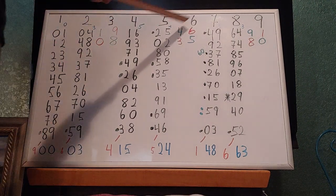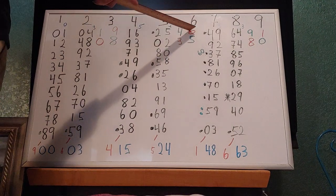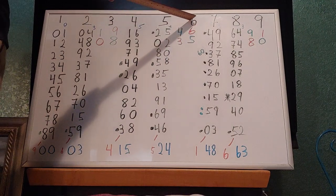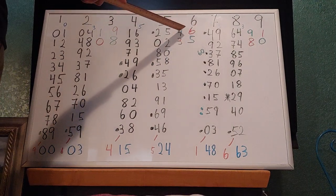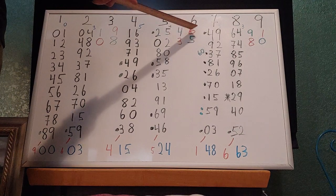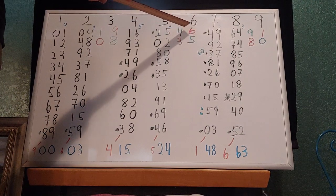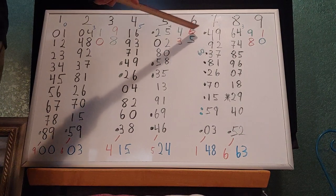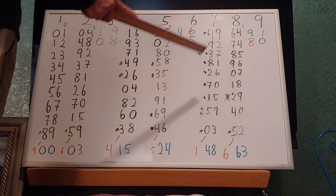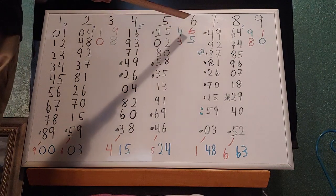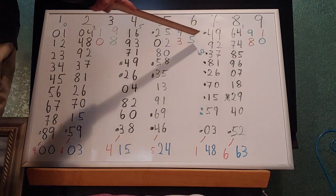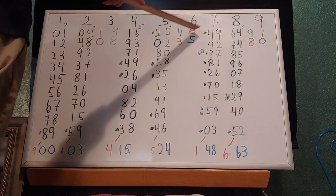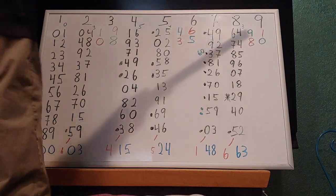Same thing for 6. 6 squared is 36, 66 squared is 4356. 666 squared is 443556. 100 sixes squared gives 99 fours, 1, 3, 99 fives, 1, 6.